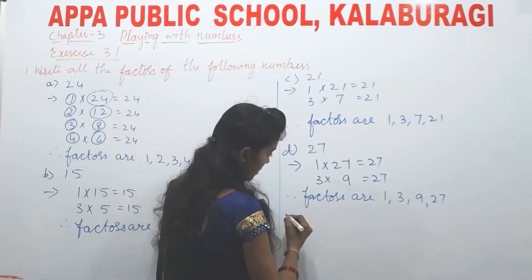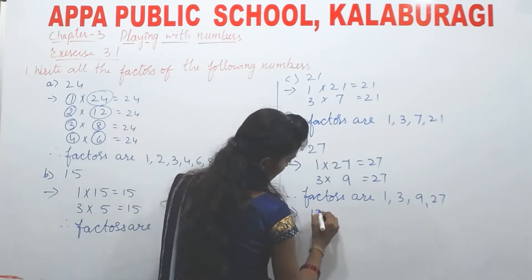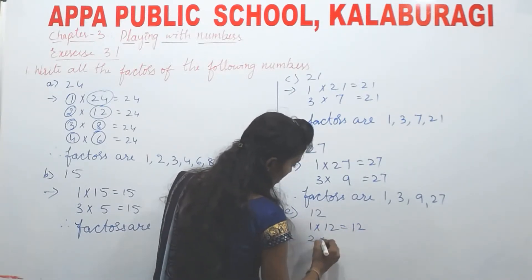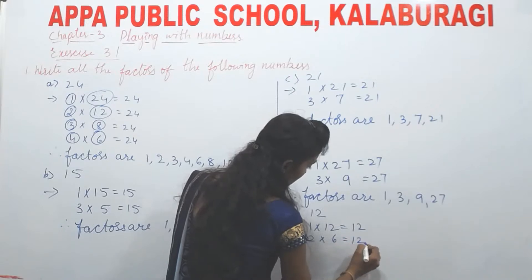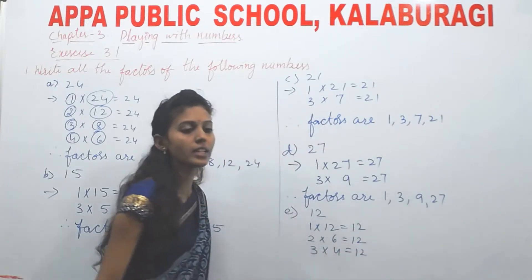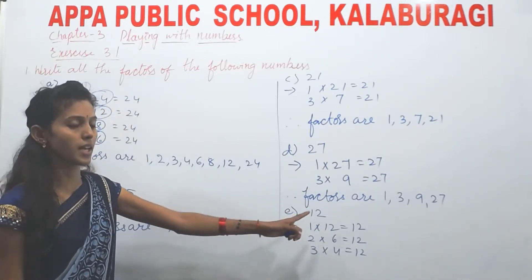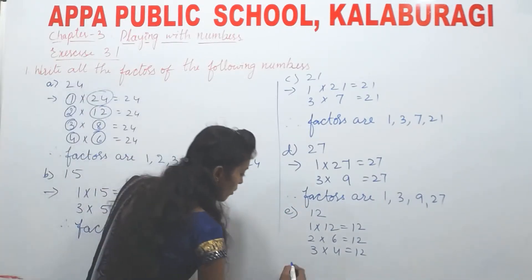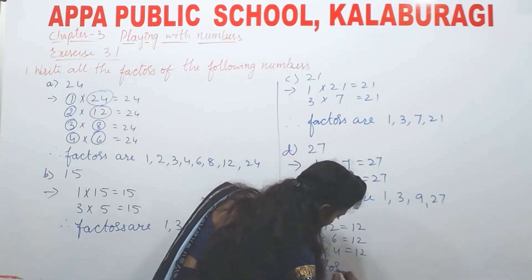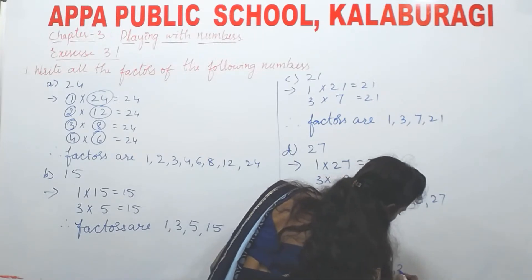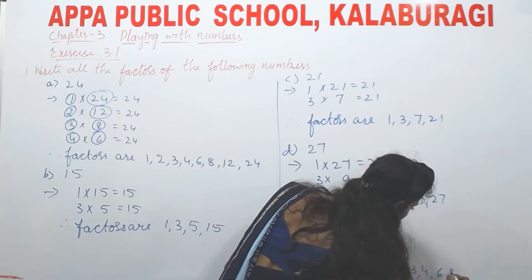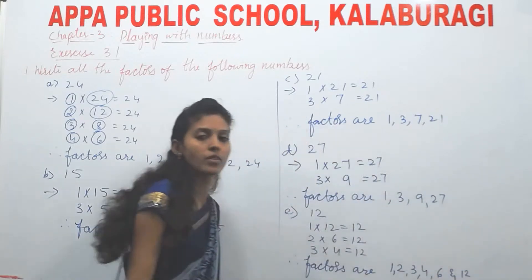Next, E is 12. 1×12=12, 2×6=12, 3×4=12, 4×3=12, 6×2=12, 12×1=12. So the factors of 12 are 1, 2, 3, 4, 6, and 12. Over.